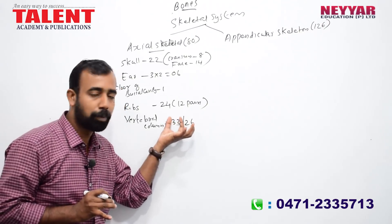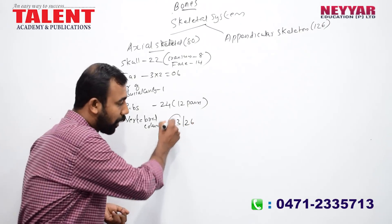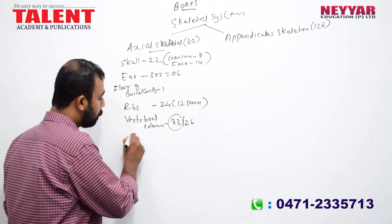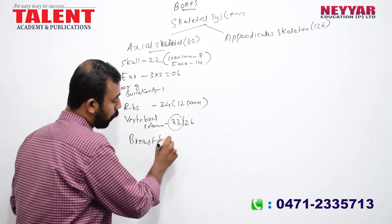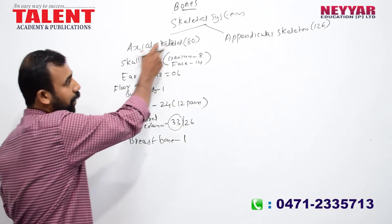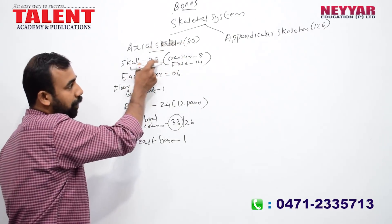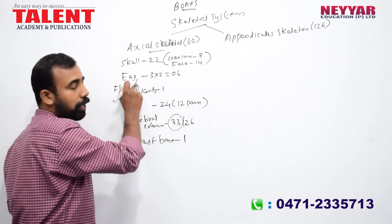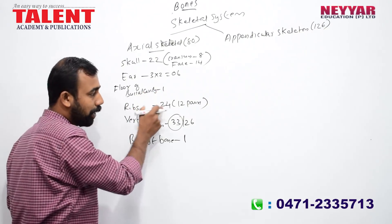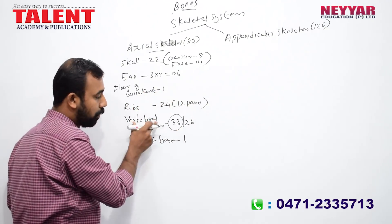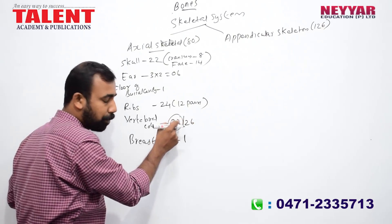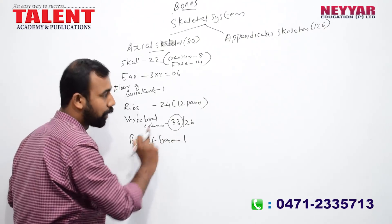The breastbone, or sternum, is 1 bone. So for the axial skeleton: skull has 22 bones, ribs are 24, vertebral column is 33, sternum is 1. The hyoid is a single bone. These together form the axial skeleton.